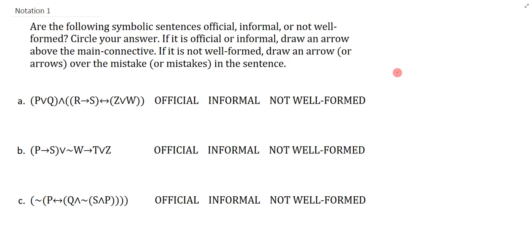Circle your answer. If it is official or informal, draw an arrow above the main connective. If it is not well-formed, draw an arrow or arrows over the mistake or mistakes in the sentence.